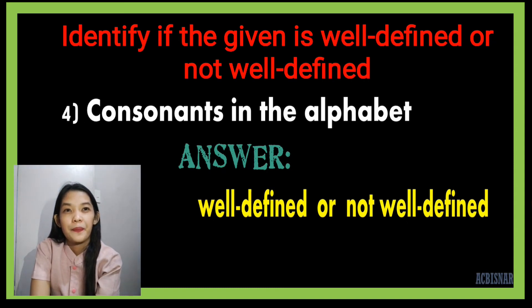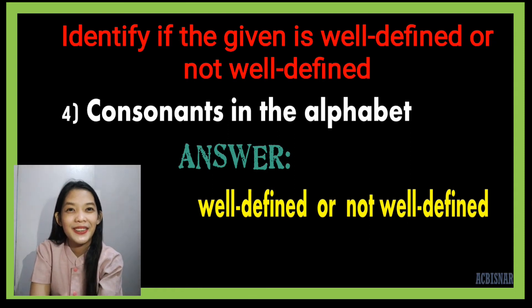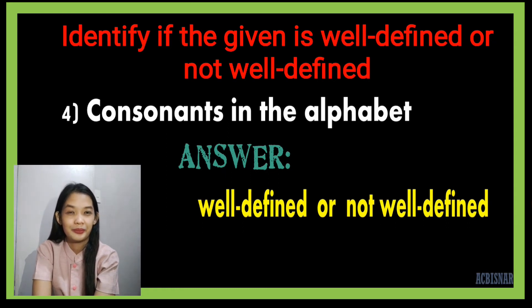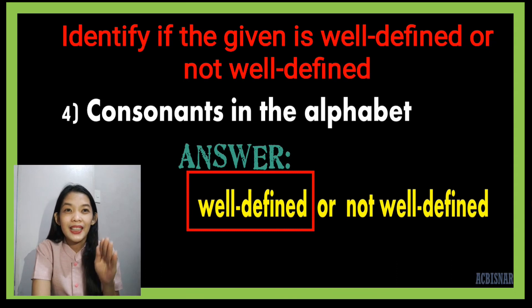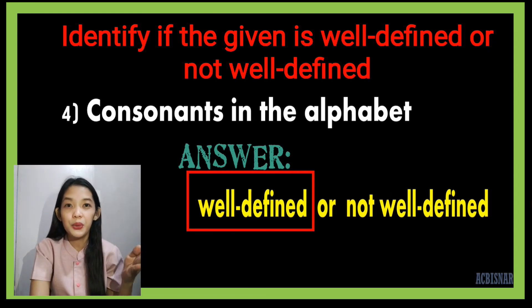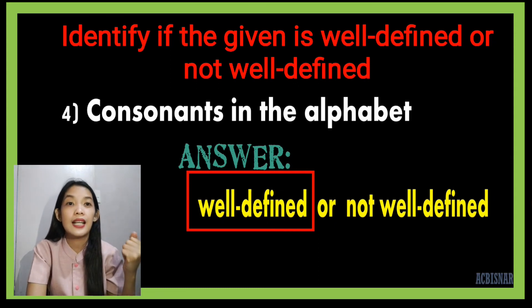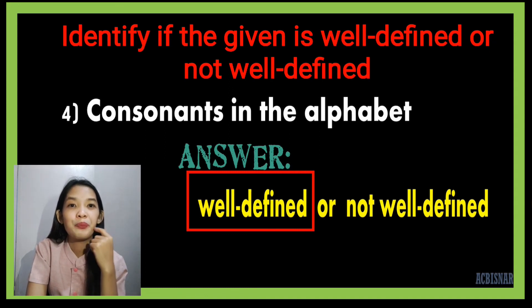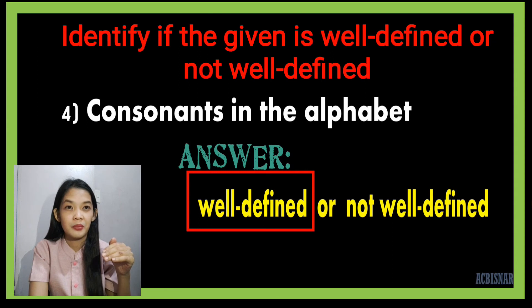Number four: consonants in the alphabet. The answer is well-defined, because there is no other alphabet being used — we are using the English alphabet. We identified the vowels as a, e, i, o, u, and the consonants in the English alphabet are also clearly defined.